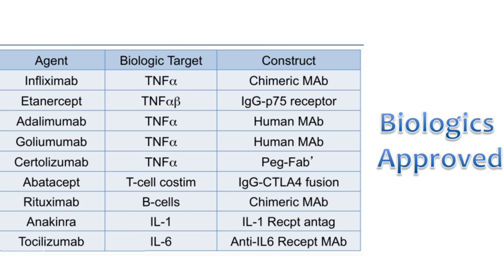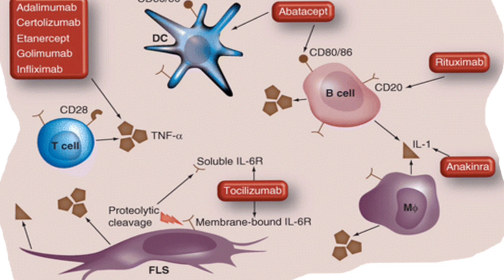Infliximab is an anti-TNF antibody — chimeric, part murine and part human. Adalimumab, golimumab, and certolizumab are all humanized anti-TNF agents. Abatacept causes co-stimulatory blockade. Rituximab is anti-CD20, targeting B-cells. Anakinra is an interleukin-1 receptor antagonist. Tocilizumab is an interleukin-6 receptor blocker — useful not only in rheumatoid arthritis but also recently in cytokine storm in COVID-19 patients.